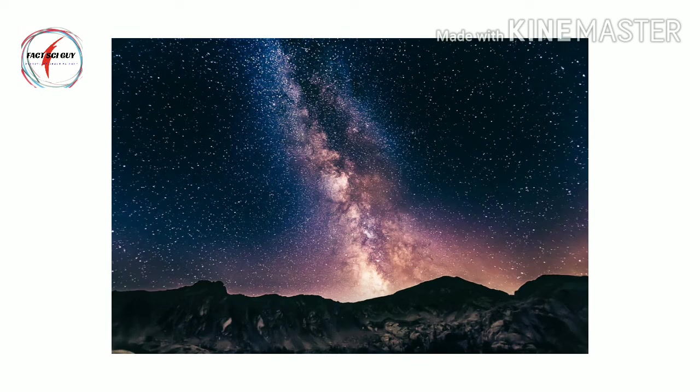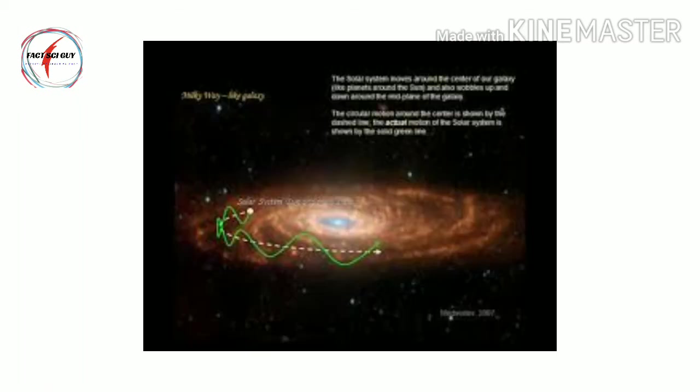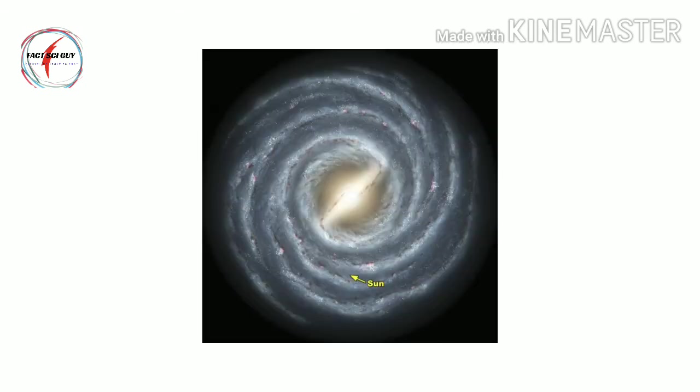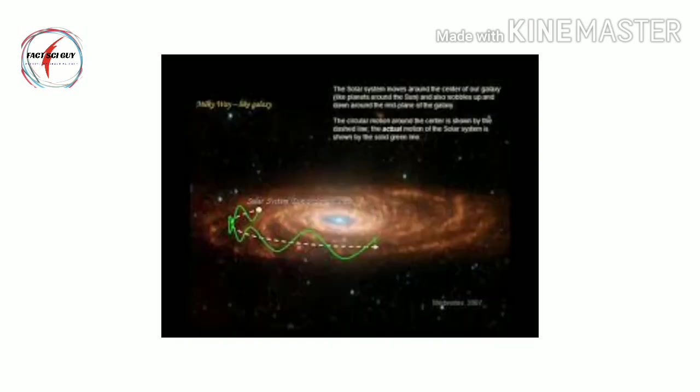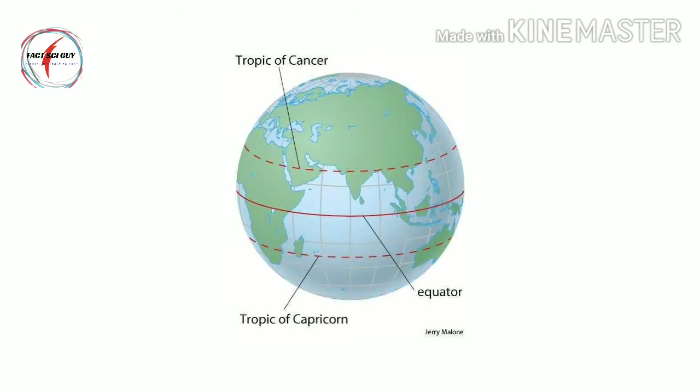The sun rotates as its orbits the center of the Milky Way. Its spin has an axial tilt of 7.25 degrees with respect to the plane of the planet's orbit. Since the sun is not a solid body, different parts of the sun rotate at different rates. At the equator, sun spins around once about every 25 days. But at its poles, the sun rotates once on its axis every 36 days.